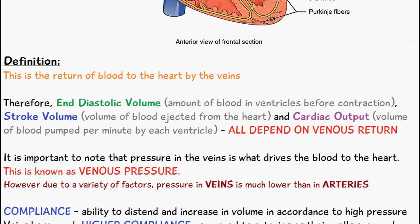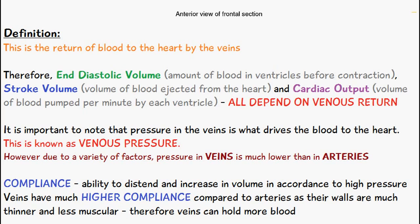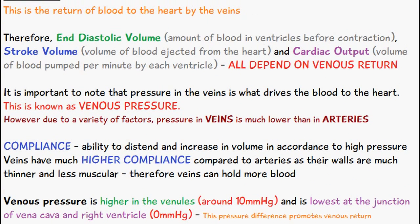Another term worth mentioning is compliance, which will help you understand venous return a bit better. Compliance is the ability to distend — meaning to swell up or expand — and increase in volume in accordance with high pressure. Veins have a much higher compliance compared to arteries because their walls are much thinner and less muscular, so the veins can hold more blood.